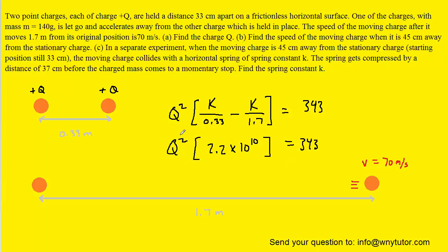Let's divide both sides by that 2.2 times 10 to the tenth, and then take the square root of that result since we're solving for Q. You should get roughly 1.25 times 10 to the minus 4. The standard unit will be coulombs. This is the correct answer to part A.